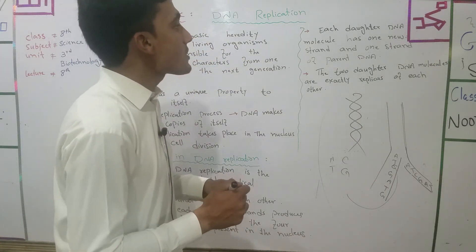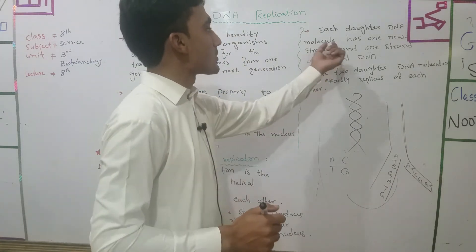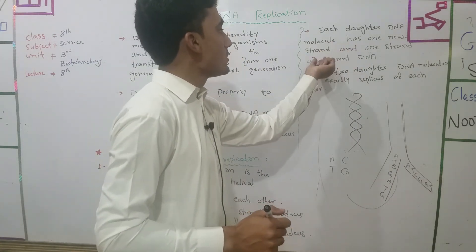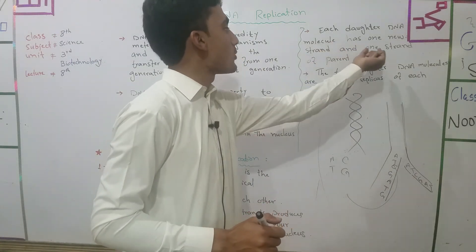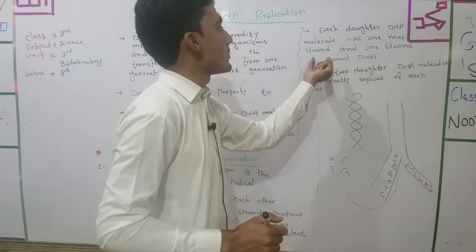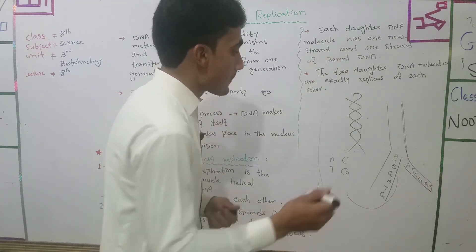Each daughter DNA molecule has one new strand and one strand of the parent DNA.